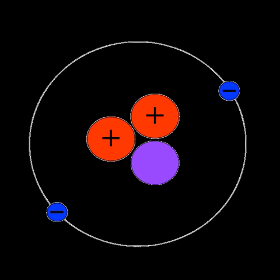3He is also present in the Earth's atmosphere. The natural abundance of 3He in naturally occurring helium gas is 1.38 × 10−6.